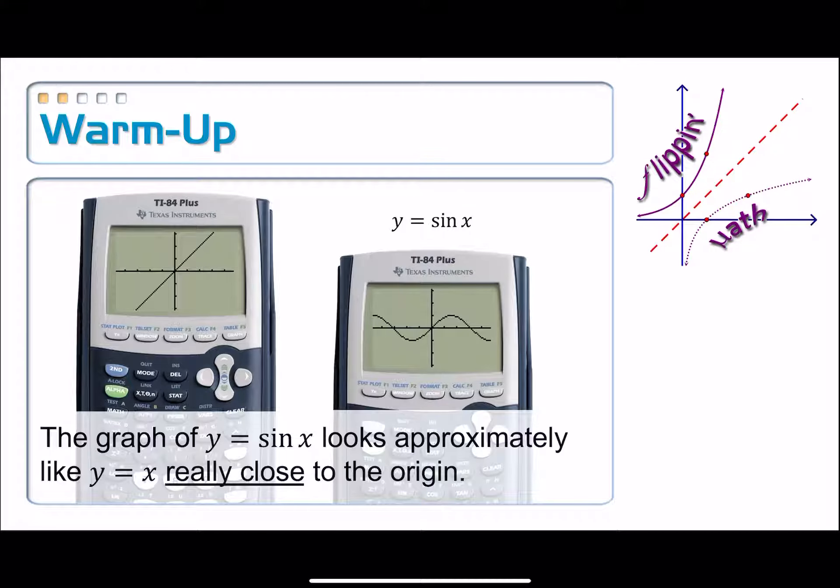And in that warm-up activity, I tricked you. I gave you a graph that looked like y equals x, but it turned out it was y equals sine x. And what that meant was the graph of y equals sine x looks approximately like or really, really close to y equals x as we are really super close to the origin. This is a principle that is called local linearity.